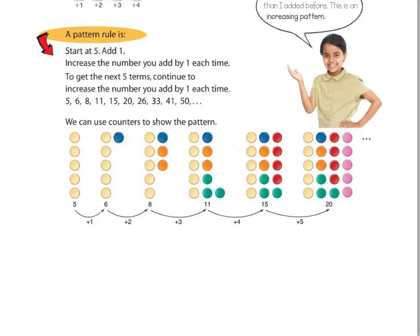Alright, or we could write this pattern in words, and we could say that we are starting at 5, to be specific, and we are adding 1, but then we are increasing the number you add by 1 each time. So we are adding by 1, then adding by 2, then adding by 3, then adding by 4, then adding by 5, and so on.